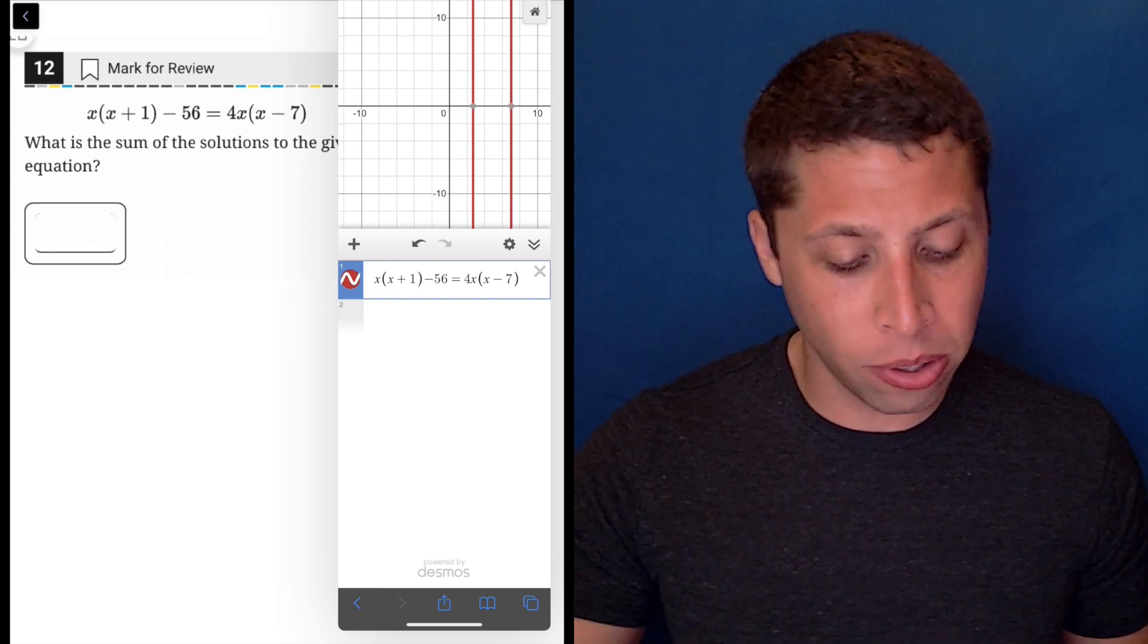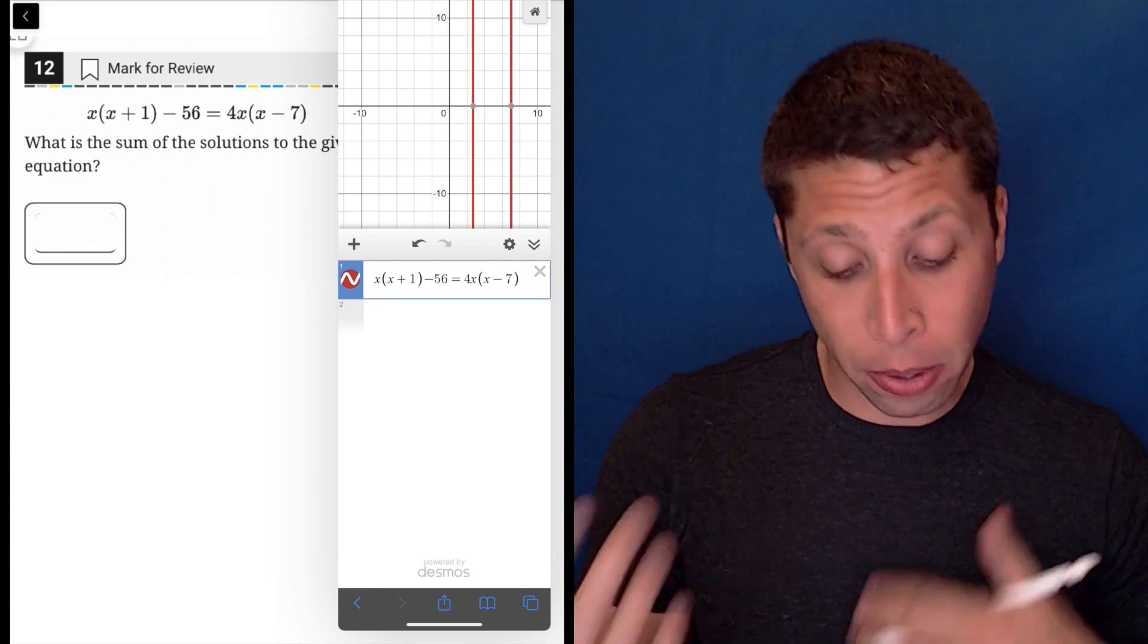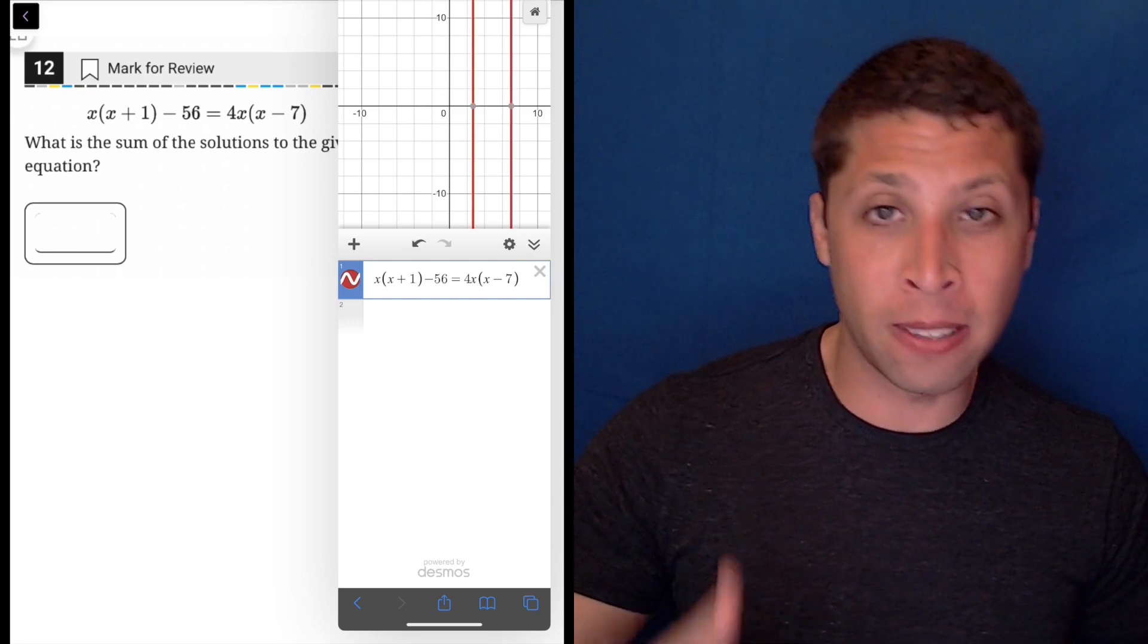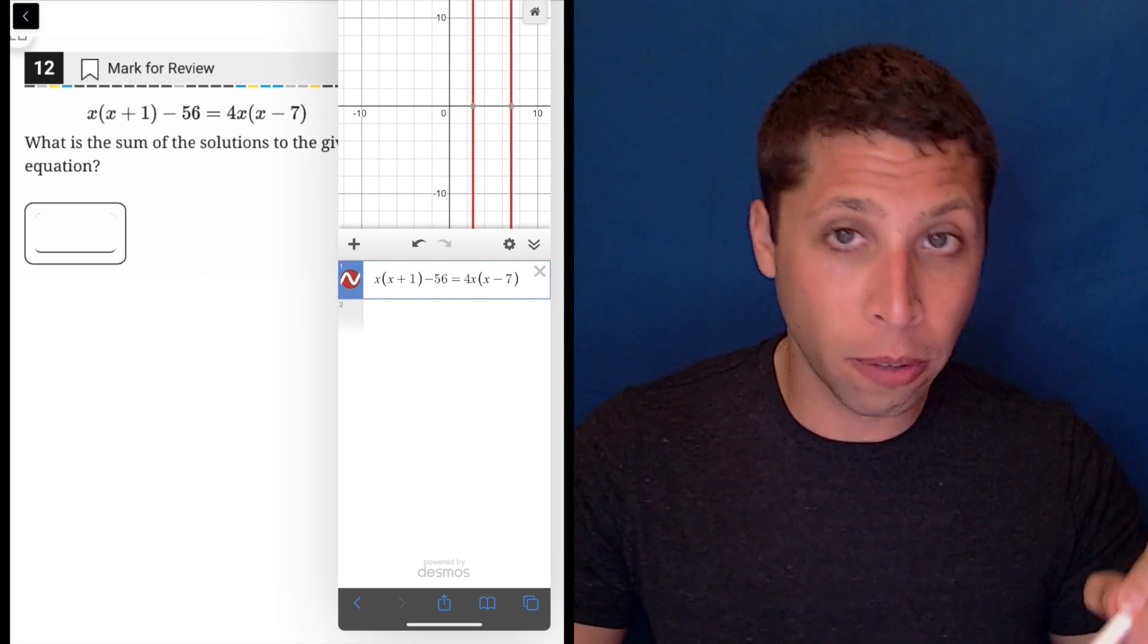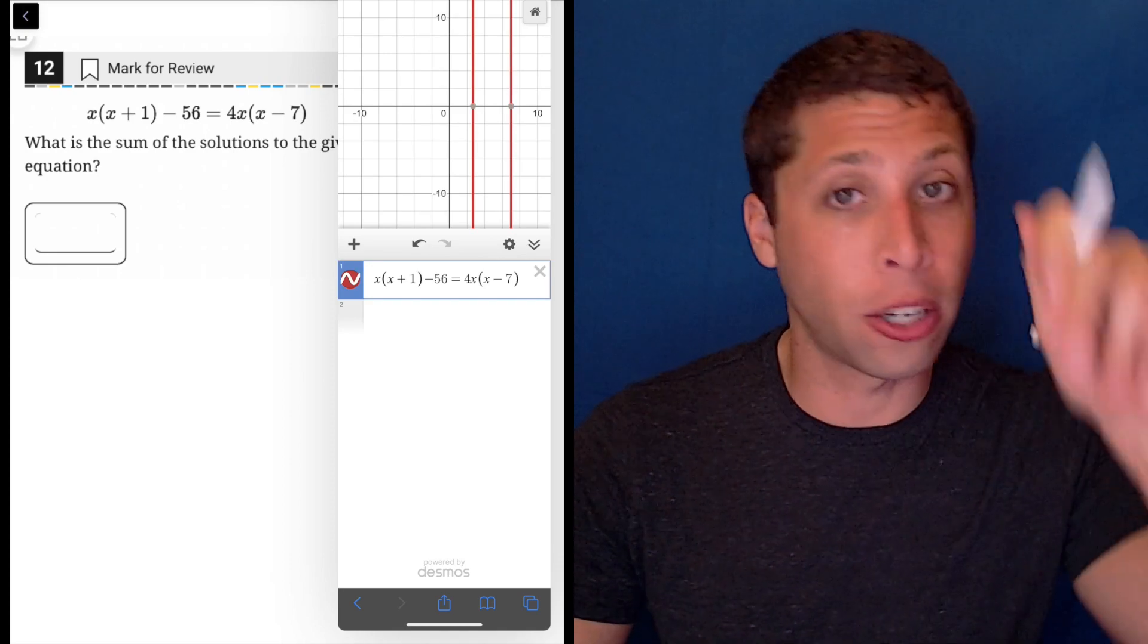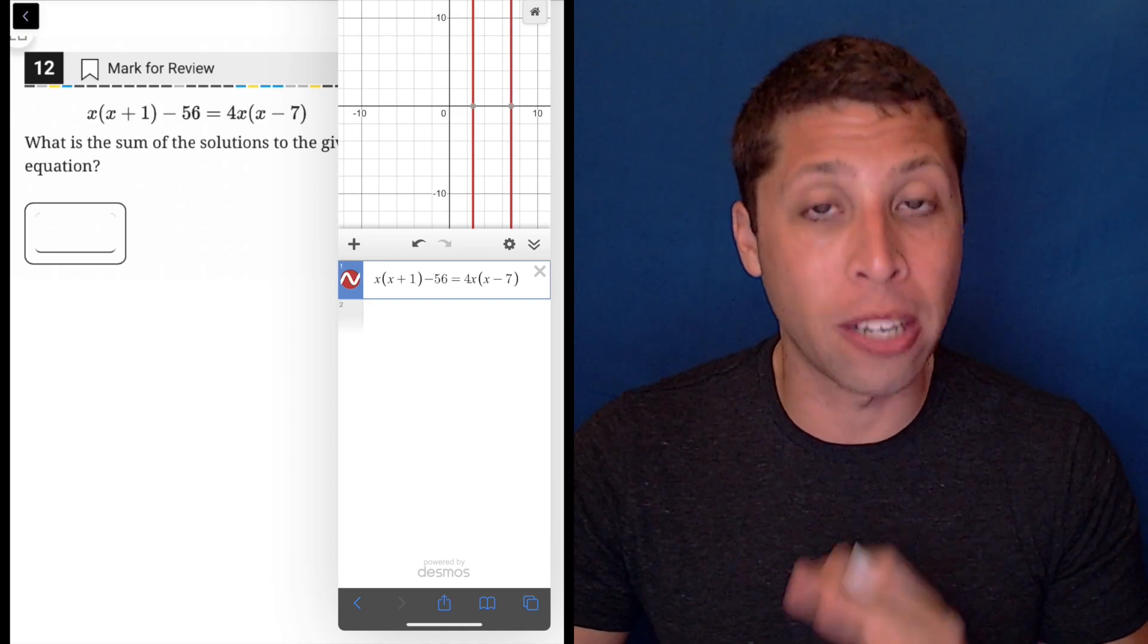And notice what's happening is those lines look pretty straight. And maybe you're thinking, well okay, if it's solutions, then maybe it's a quadratic and maybe it curves at some point. We just, I could zoom out and I could see it curve. No, that's not going to happen because there's no y.